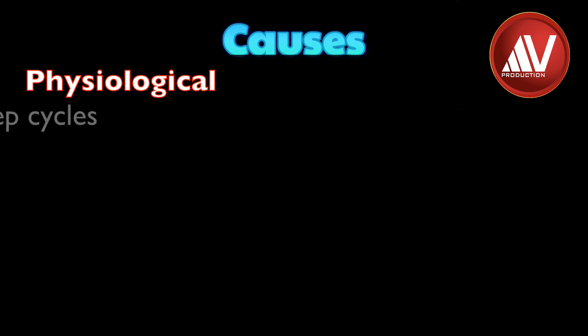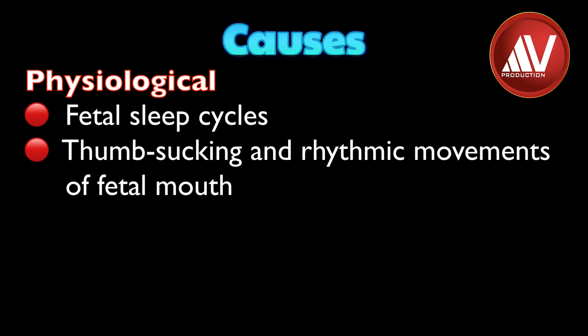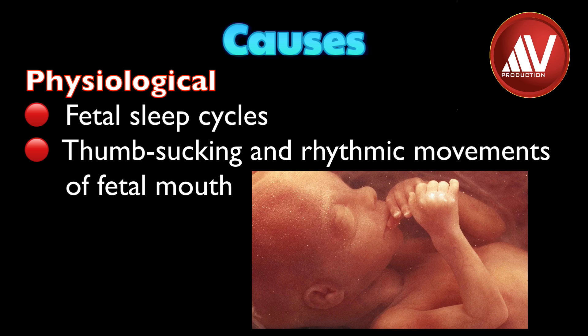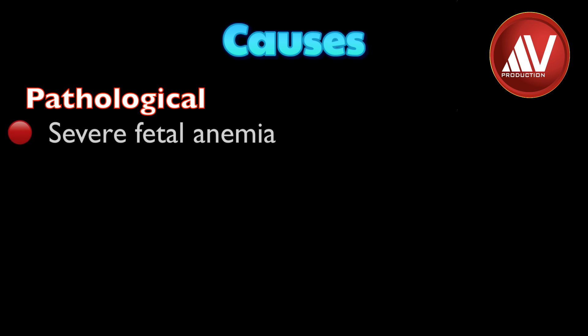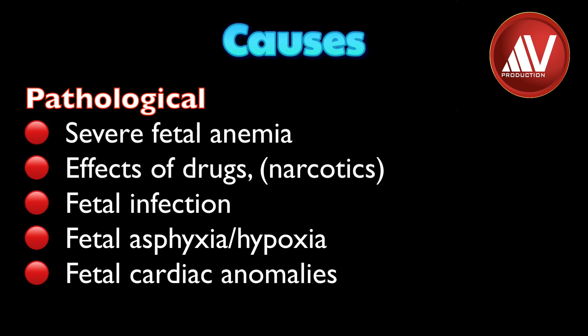Sinusoidal pattern can be caused by physiological or pathological causes. The physiological causes are fetal sleep cycles, thumb sucking and rhythmic movements of fetal mouth. The pathological causes are severe fetal anemia of different etiologies, effect of drugs particularly narcotics, fetal asphyxia or hypoxia, fetal infection and fetal cardiac anomalies.